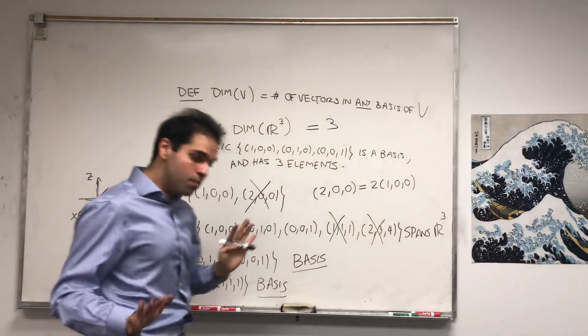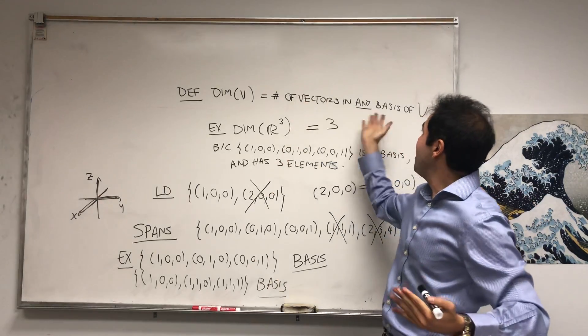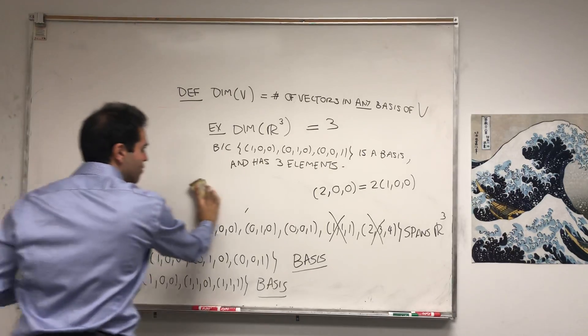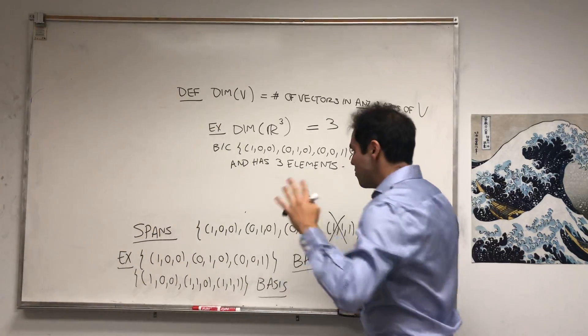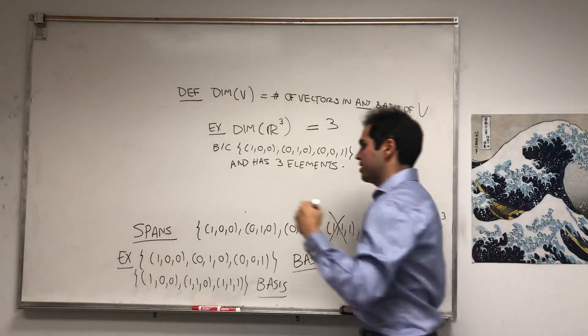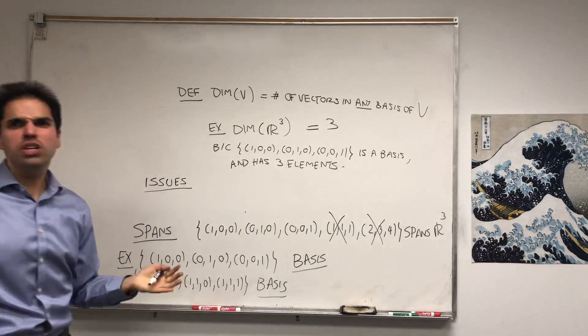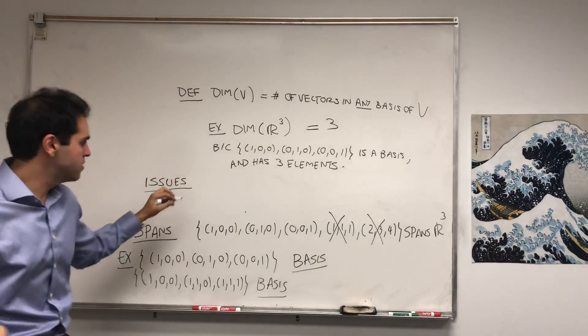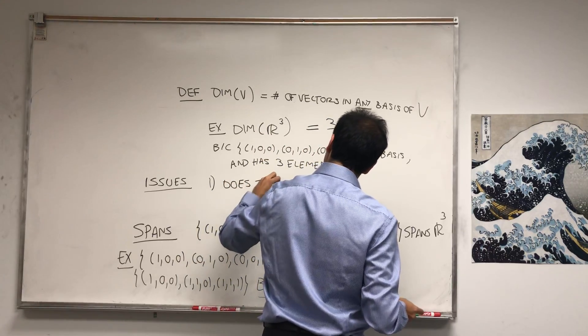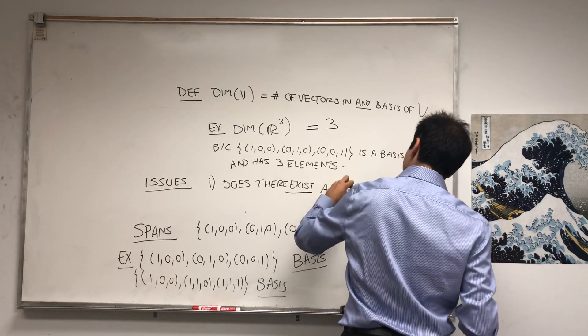Which of course begs the question: how do we know that any basis has the same number of vectors? This is a very non-trivial fact, but let me outline it. It turns out there are two issues here. First of all, how do we know any space has a basis? Does there exist a basis?